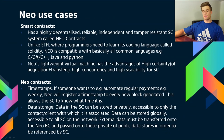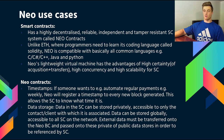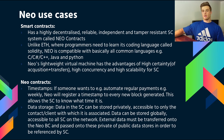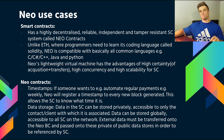NEO has a highly decentralized, reliable, independent, and tamper-resistant smart contract system called NEO contracts. Unlike Ethereum, where programmers need to learn Solidity, NEO is compatible with basically all common languages like C, C#, C++, Java, and Python. NEO's lightweight virtual machine has the advantage of high certainty in acquisition of assets and transfers, and high concurrency and scalability for smart contracts. NEO contracts also include timestamps — so for automated regular payments, NEO registers a timestamp to every new block, allowing the smart contract to know exactly what time it is to stay up-to-date and valid.